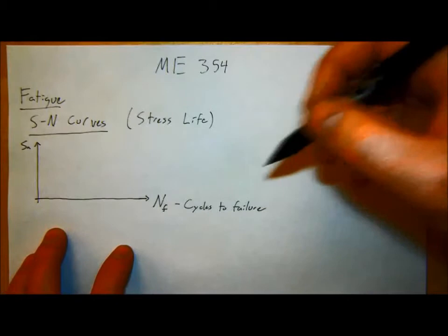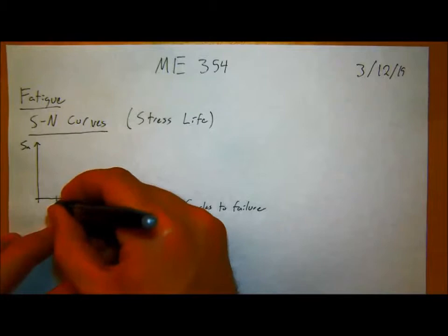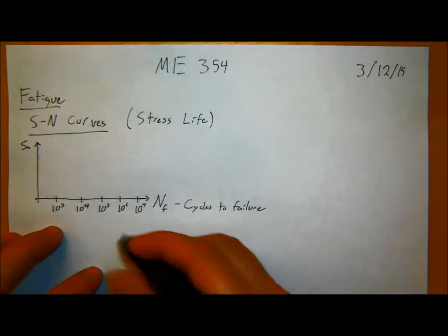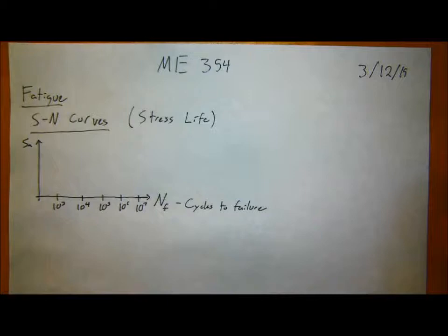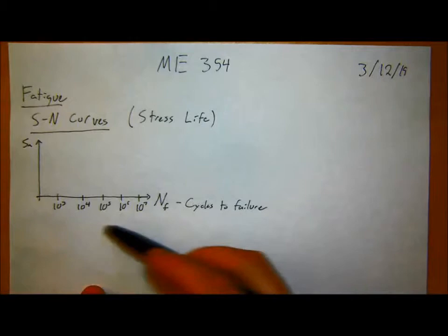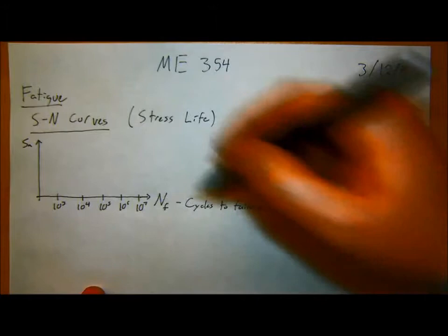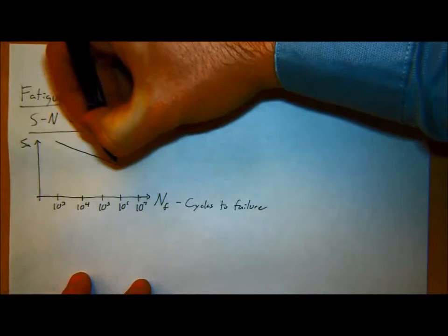N_F, cycles to failure, was generally on a log scale — something like 10^3, 10^4, 10^5, 10^7. Above the yield stress you get low cycle fatigue because you're classically deforming the material. In the elastic regime you get high cycle fatigue, with a difference in slope depending on which regime you're in. Most of the time when people talk about fatigue they mean high cycle fatigue.